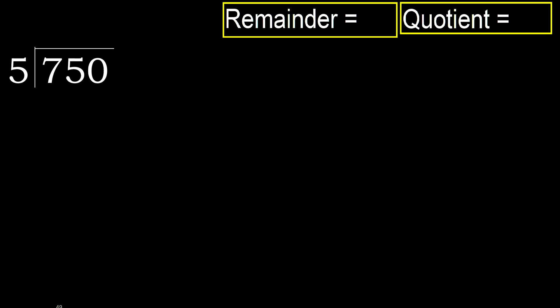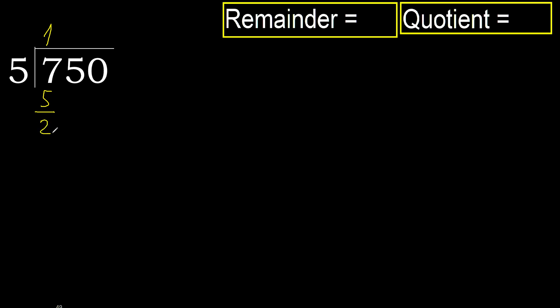750 divided by 5. 7 is not less, therefore with 7. Multiply by which number is nearest to 7 but not greater. 5 multiplied by 2 is 10, 10 is greater. Multiply by 1 is 5, is not greater. Subtract: 7 minus 5 equals 2.